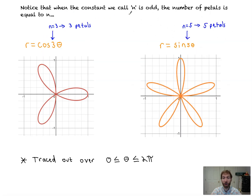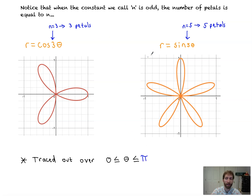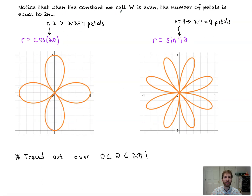Notice that when n is odd, we have exactly that number of petals. Here's r=sin(5θ): notice we have 1, 2, 3, 4, 5 petals. That curve is actually traced out from 0 to π — I'll correct that — 0 to π gets you all the values you need, and then it starts reflecting. The maximal r value is 1 everywhere, because that's the a value. Notice the symmetry about the y-axis for sine, and about the x-axis for cosine.